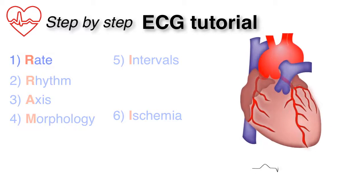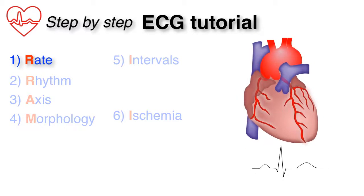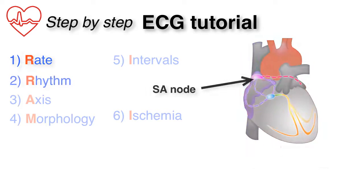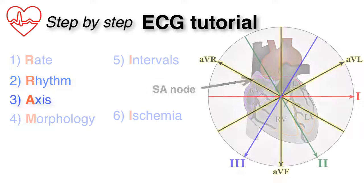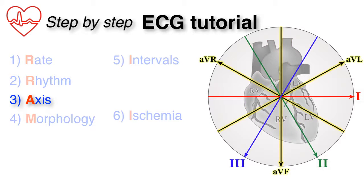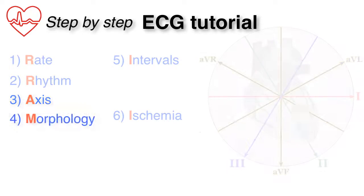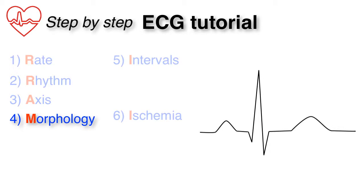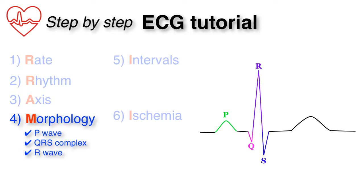First, find out the rate, then the rhythm, the axis, then look over the morphology of each wave starting with the P wave, the QRS complex. You can also look at R wave progression, then the ST segment, and the T wave.